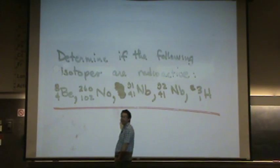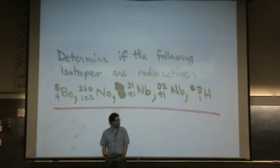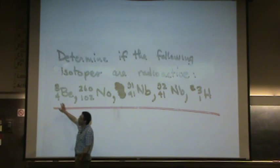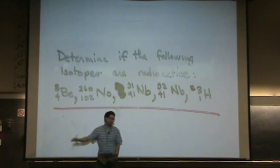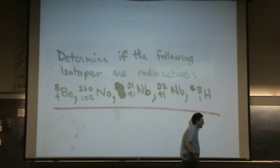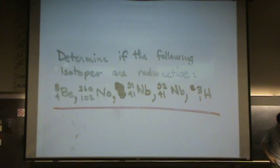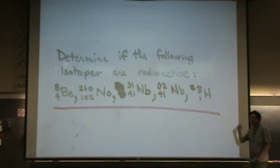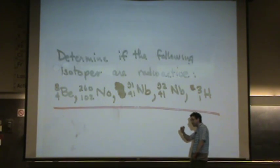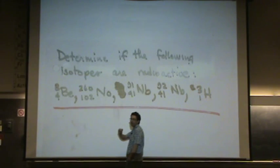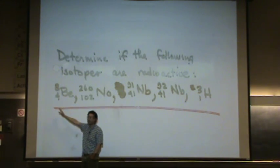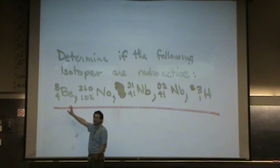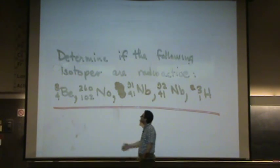Beryllium — you always want to calculate the number of protons and neutrons. Beryllium has four protons and four neutrons here. You might think it's stable; however, that's one of the two I asked you to remember that are radioactive. Usually when protons equal neutrons and you're 10 or less, whether odd or even, it's going to be stable — but this one is one of the two exceptions that's unstable.